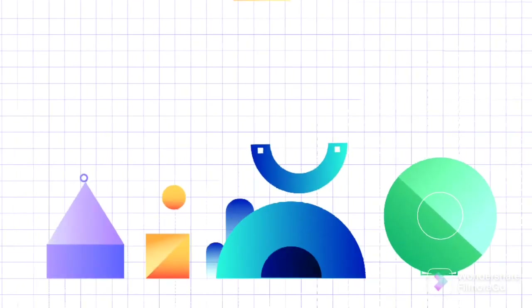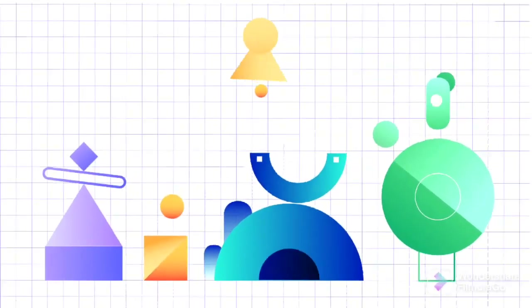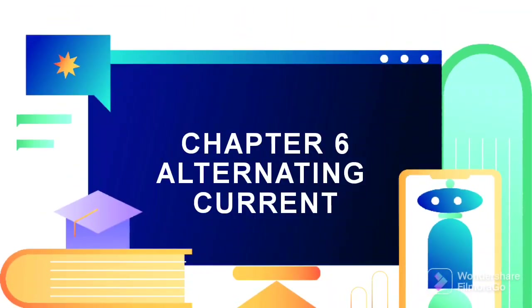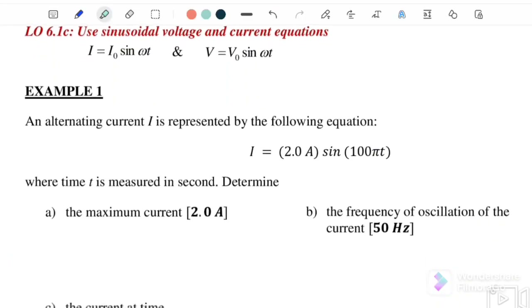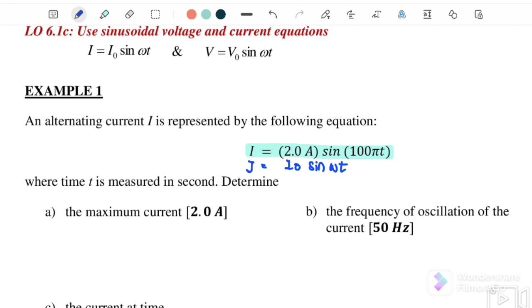Hello, welcome back to my channel. Today we are going to discuss 6.1 alternating current, Example 1. An alternating current is represented by the following equation: I equals 2 sin 100π T. Comparing with the standard equation I equals I₀ sin ωT, we know that I₀, the maximum value for the current, is 2 ampere, and the value for ω is 100π.